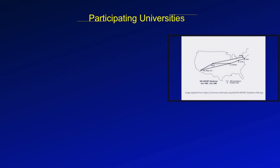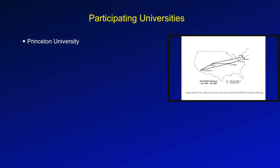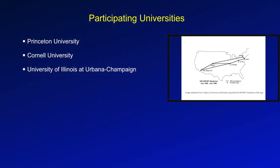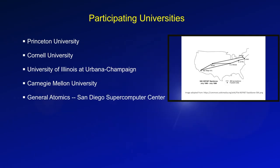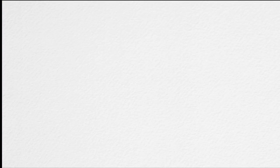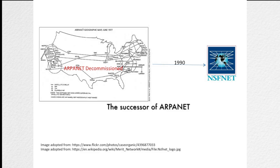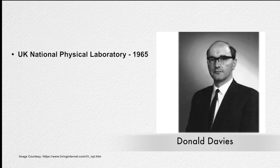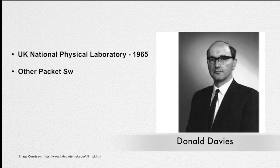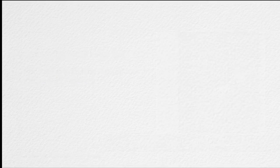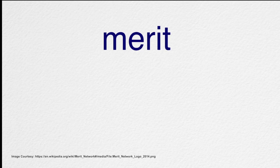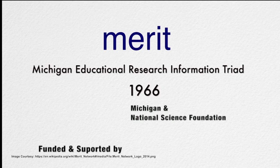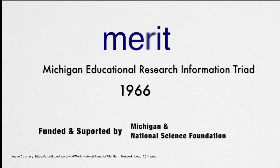The participating universities were Princeton University, Cornell University, University of Illinois, Carnegie Mellon University, and the General Atomics San Diego Supercomputer Center. NSFNet, the successor of ARPANET, became popular by the 1990s and ARPANET was decommissioned. In 1965, Donald Davies and his colleagues at the UK National Physical Laboratory independently discovered the idea of packet switching and later created a small-scale packet switching version of ARPANET. Michigan Educational Research Information Triad formed Merit Networks in 1966, which was funded and supported by the State of Michigan and the National Science Foundation.